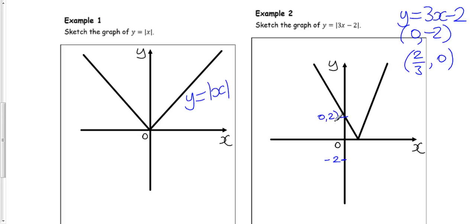So at this point, x is nothing, and y is 2. And cross the x-axis at 2 thirds 0. So x is 2 thirds, y is 0.